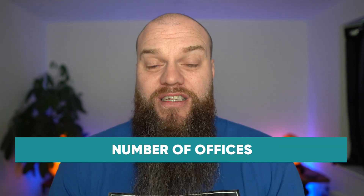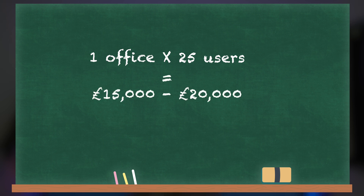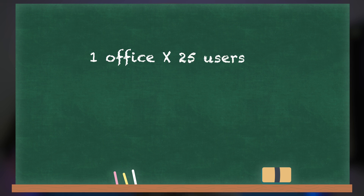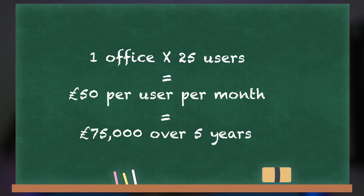The first factor is the number of offices your accountancy has. If your practice has a single office, moving to the cloud will cost you a lot more money than having a server. For example, with one office and 25 users, a server solution is going to cost about £15,000 to £20,000 — a one-off cost that will last five years. A fully cloud solution for the same setup costs a minimum of £50 per user per month. Over five years, that comes to about £75,000 — versus £20,000. That's a big cost difference.